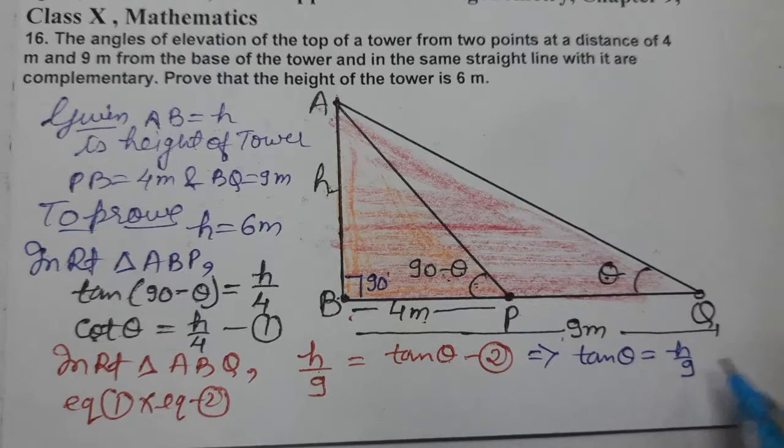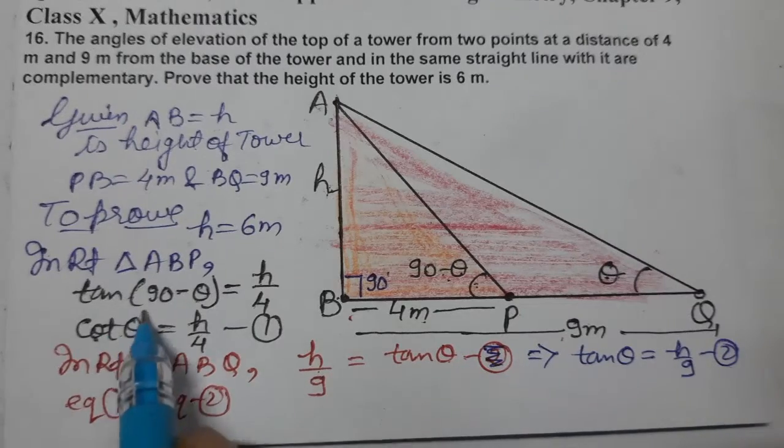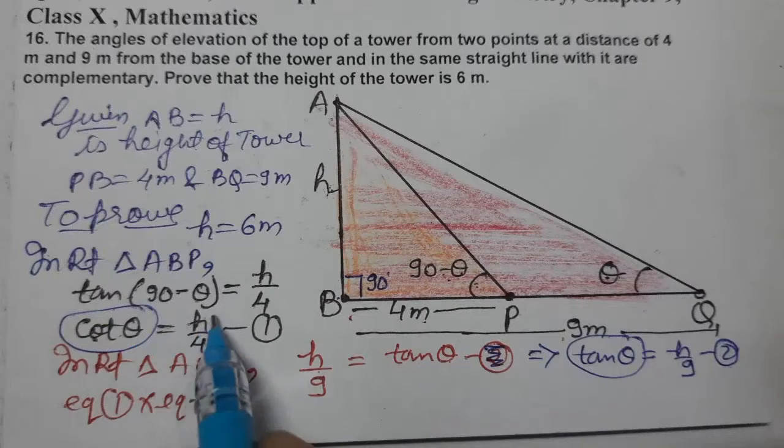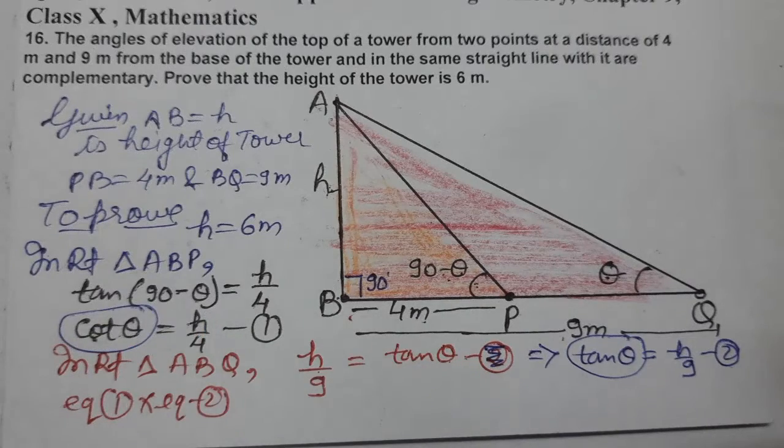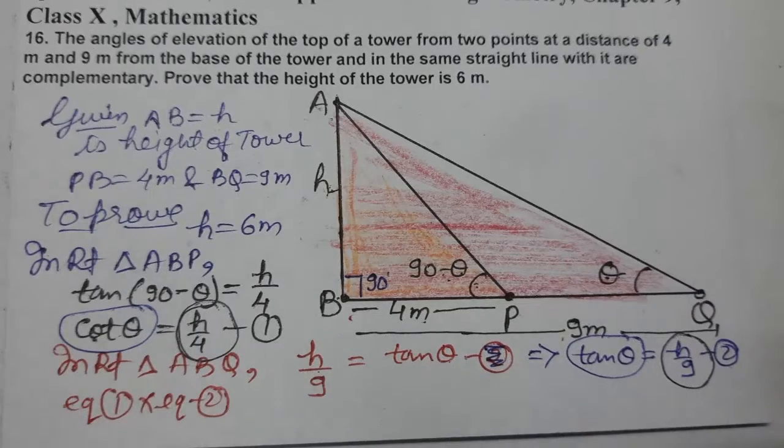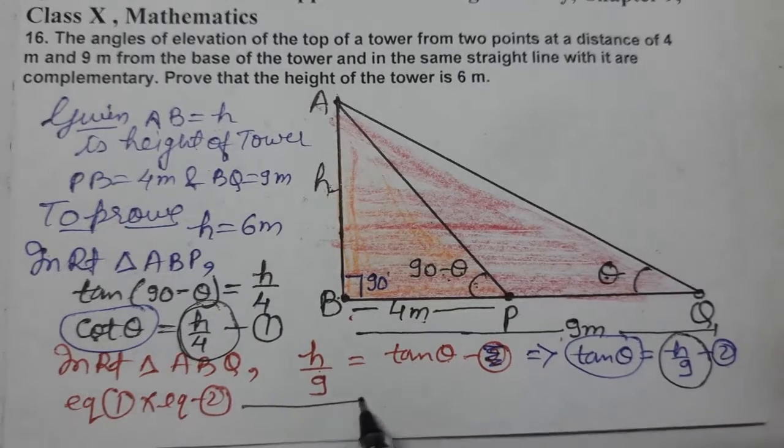So tan theta equals h by 9, which is equation number 2. Now we have cot theta as h by 4 and tan theta as h by 9.